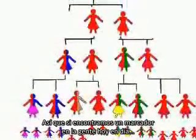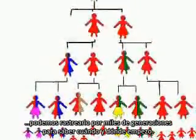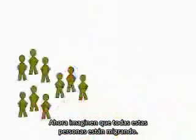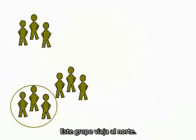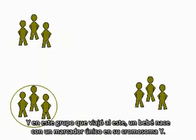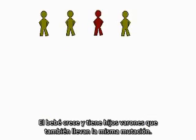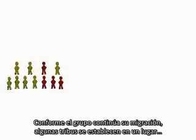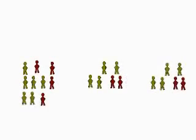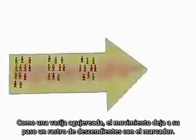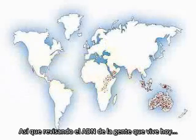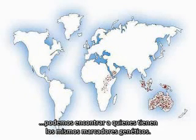So if we find a marker in people today, we can trace it back through thousands of generations to find out when and where it started. Now imagine all these people were migrating. This group stays put, this group moves north, and in this group headed east, a baby boy is born with a unique marker on his Y chromosome. The baby grows up and has male children who also carry the same marker. As the group continues its migration, some tribes settle and others keep moving eastwards. Like a leaky boat, the movement leaves in its wake a trail of descendants with the red genetic marker. So by checking the DNA of people living today, we find those with the same genetic markers.